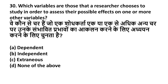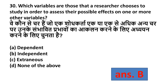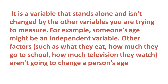Question 30: Which variables are those that a researcher chooses to study in order to assess their possible effects on one or more other variables? Option A: Dependent variable, Option B: Independent variable, Option C: Extraneous variable, Option D: None of the above. The right answer is Option B — Independent variable. An independent variable stands alone and isn't changed by other variables. For example, someone's age is not determined by others' age, so it is an independent variable.